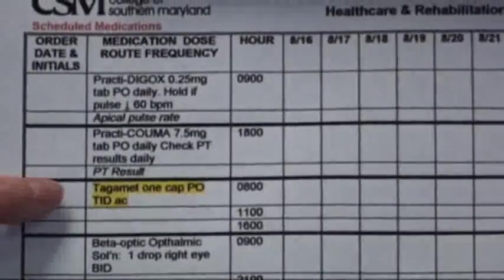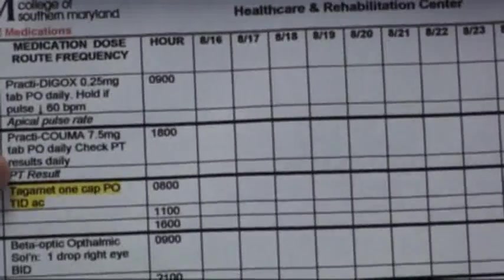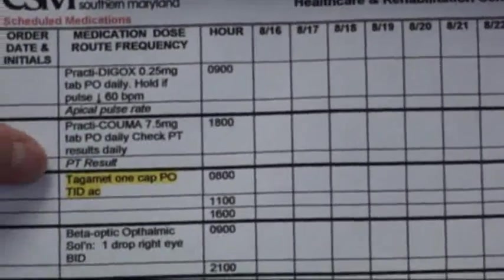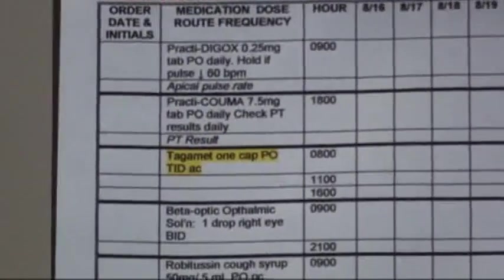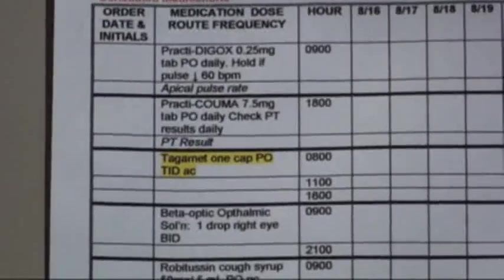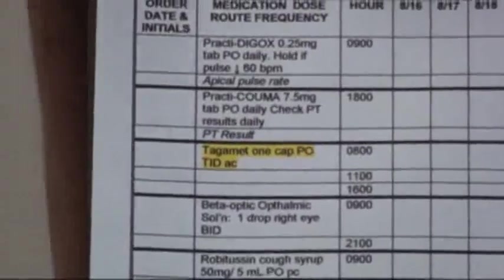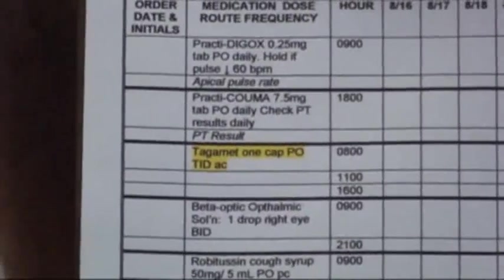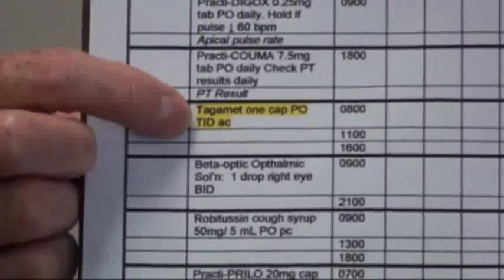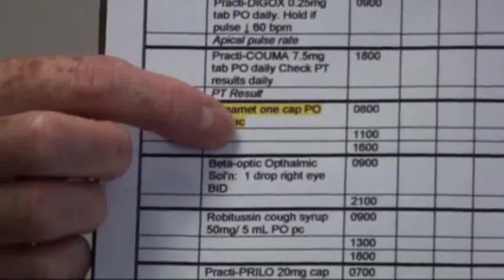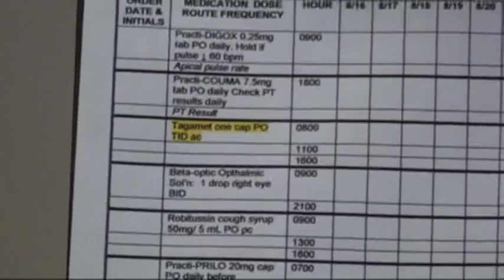I've highlighted in yellow some things you have to look out for. The next order says Tagamet — one capsule, PO TID AC. Tagamet is the drug, but 'one capsule' doesn't help me any — it doesn't give me the dosage. You should never give a medication without an actual milligrams, milliliters, micrograms, or some type of dosage, even units. So that's an error. The frequency is three times a day before meals, so that's okay, and PO is the route.